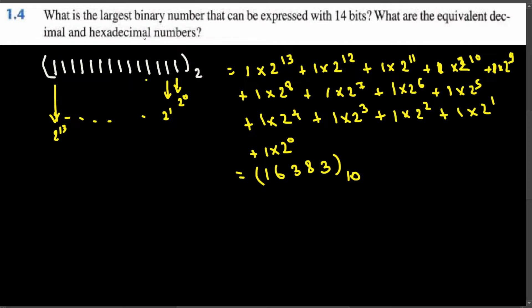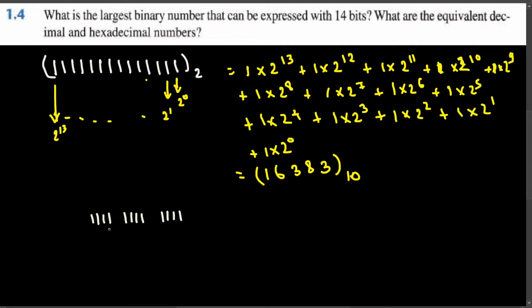Now let's see how to convert this binary number into hexadecimal. To convert binary to hexadecimal, you group the digits by four, going from right to left. We have 14 ones total, so I group four, then another four, then another four, and two are left over. Since we don't have a full group of four, we add leading zeros to fill it out.